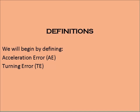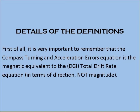We will begin by defining acceleration error (AE) and turning error (TE). It is very important to remember that the compass turning and acceleration errors equation is the magnetic equivalent of the DGI total drift rate equation — in terms of direction, not magnitude. Apparent wander due to transport wander will occur at the same time as earth rate.